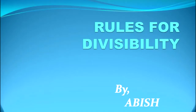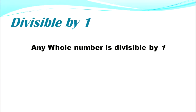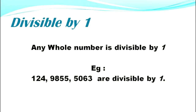Rules for divisibility. Divisible by one: any whole number is divisible by one. Example: 124, 9800, and 5063 are divisible by one.